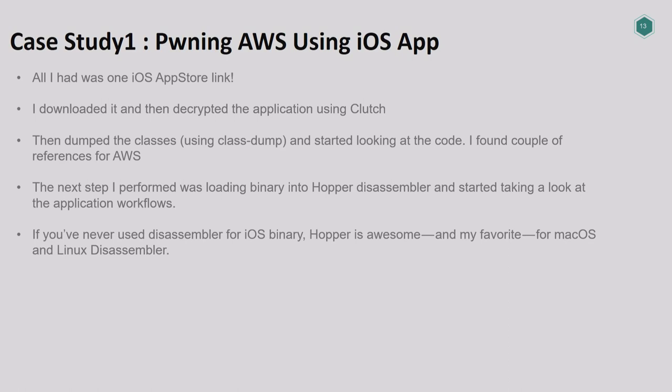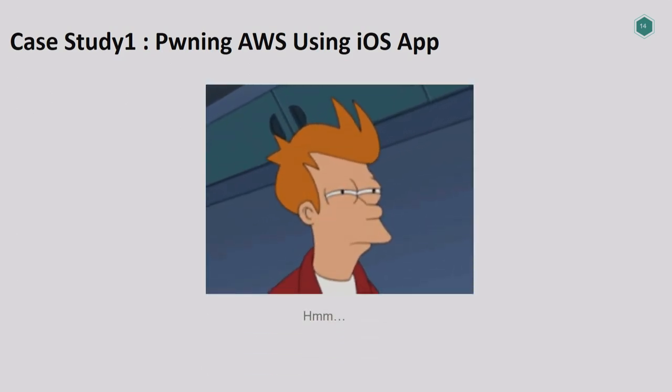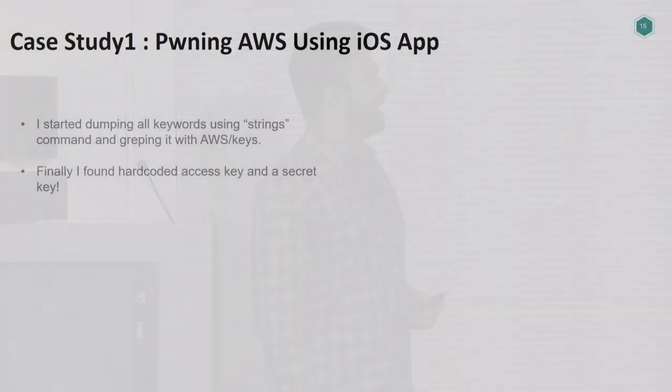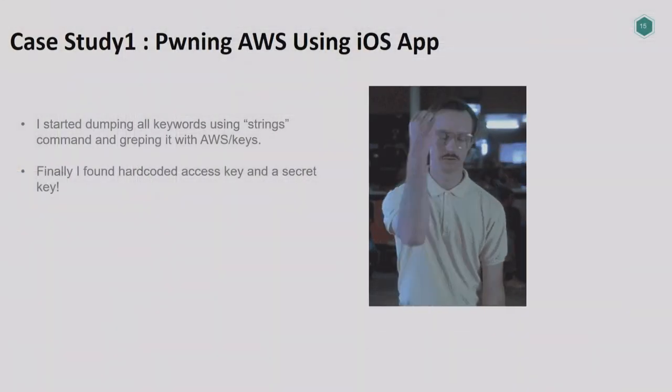If you've never used Hopper, you should — it's one of my favorites and it's very easy to use for iOS binaries. After disassembling, I found references to AWS. I then dumped all the keywords using the strings command and grepped for AWS. Finally, I found a hardcoded access key and secret key in the iOS binary.